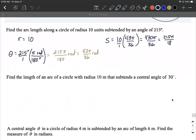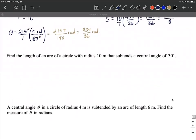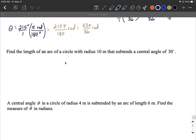A couple other short ones here. We're going to find the length of an arc of a circle with radius 10 meters that subtends a central angle of 30 degrees. Pretty similar process. R is 10, theta is 30 degrees. We're going to rewrite that in radians by setting this up so degrees cancel out: 180 degrees equals π radians.